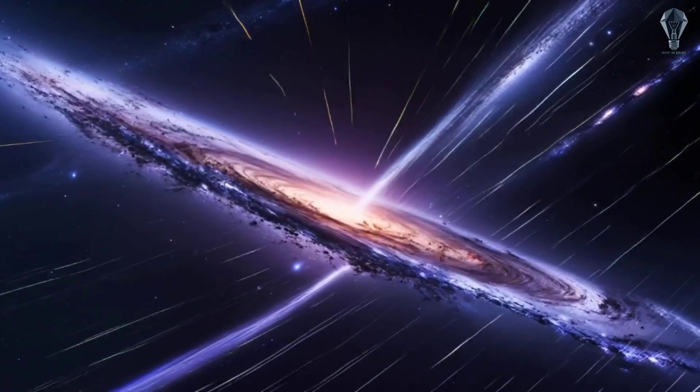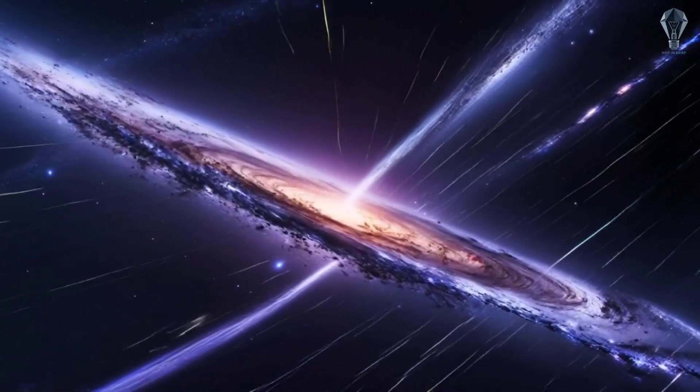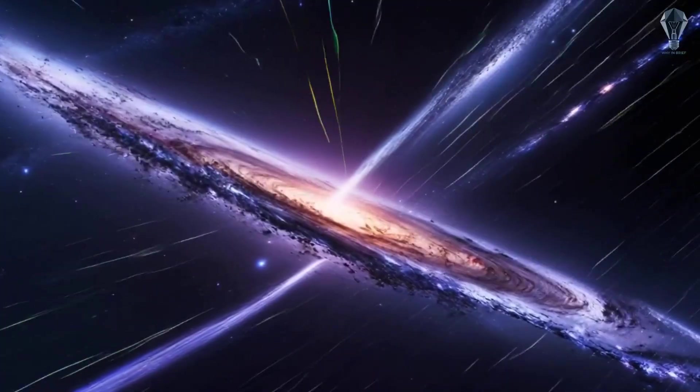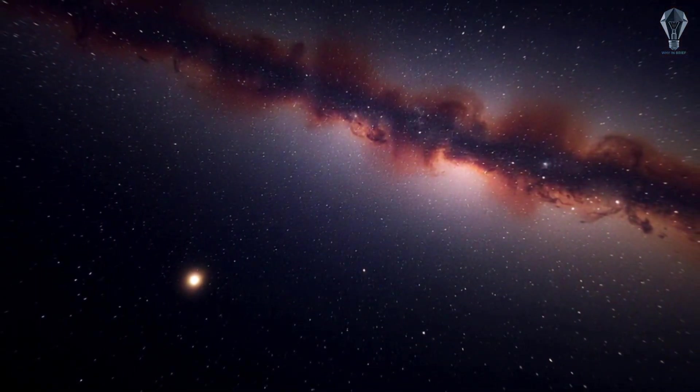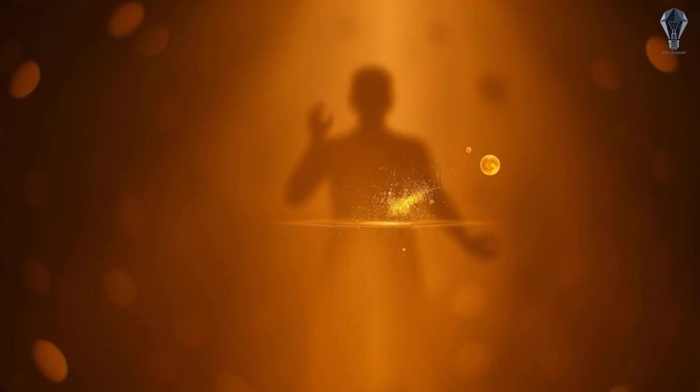Hubble showed the Magellanic clouds are moving too fast to be long-term orbiting companions. It's like realizing your quiet neighbors are actually just passing through on a high-speed road trip. This means they might be first-time visitors to our cosmic neighborhood.